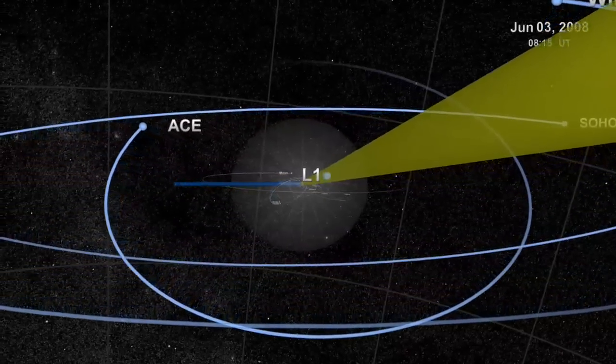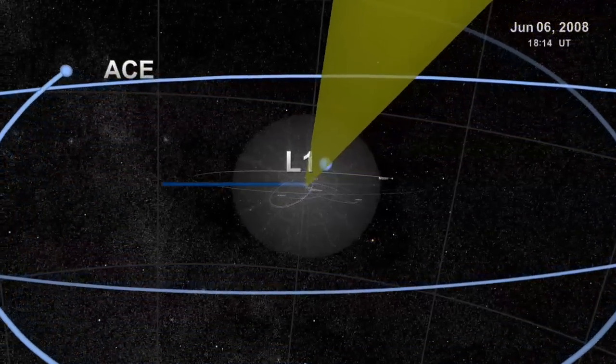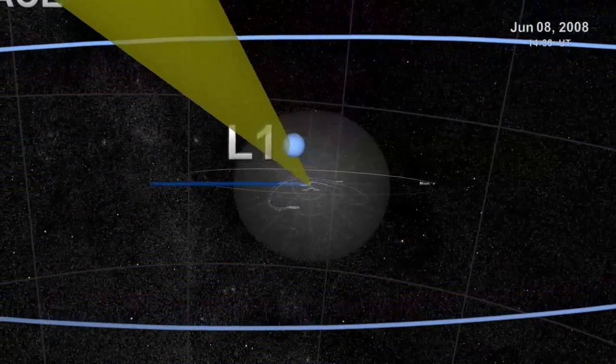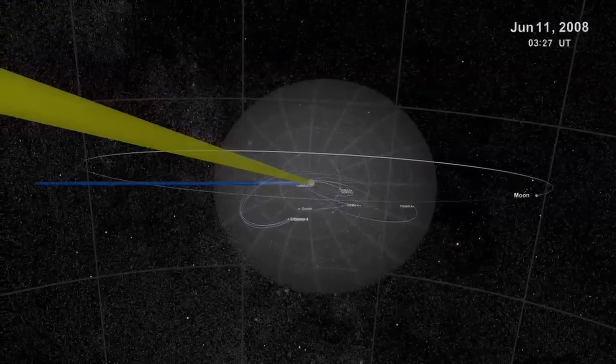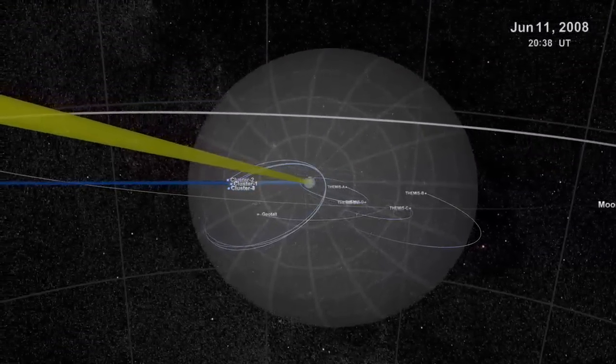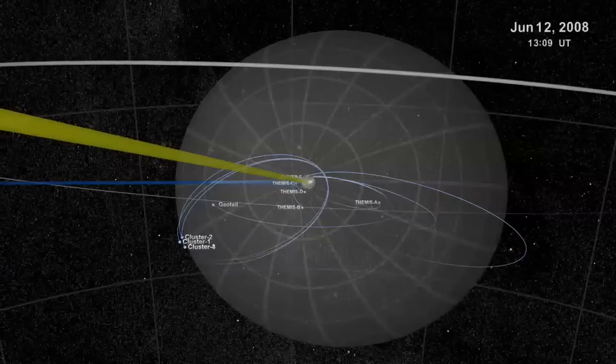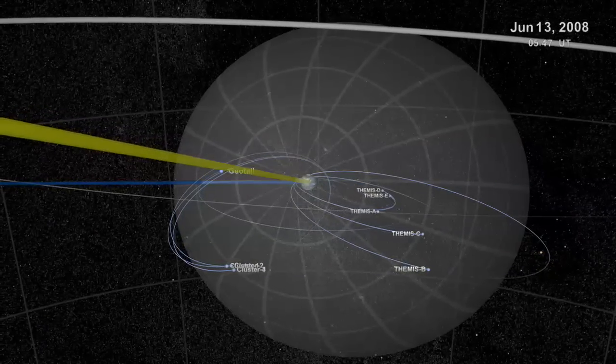Notice how L1 exists well in front of the magnetosphere. This part of the solar system is fully bathed in the solar wind without the protection of Earth's magnetic shield. Therefore, it's extremely useful for studying solar activity without interference from the Earth.